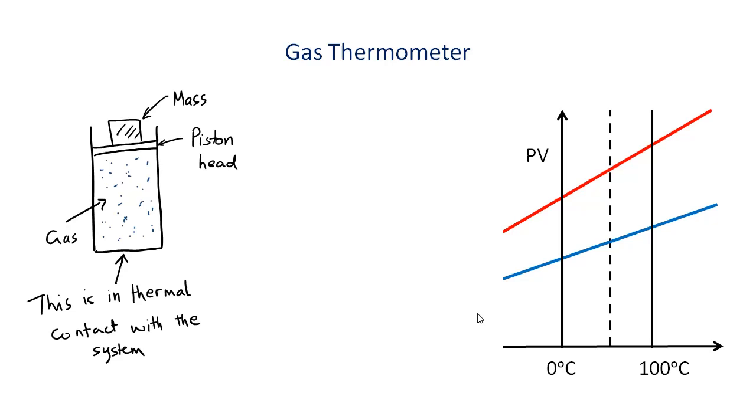Interestingly, if the gas is cooled below 0 degrees Celsius, then for all gases, PV keeps decreasing till it finally becomes 0. That is, the gas does not exert pressure anymore at T is equal to minus 273.15 degrees Celsius. The absolute 0. The PV versus temperature lines for all gases meet at absolute 0. Absolute 0 is the lowest possible temperature and is one of the two points required to define the linear temperature scale.